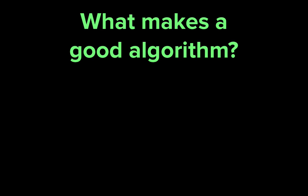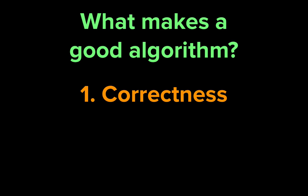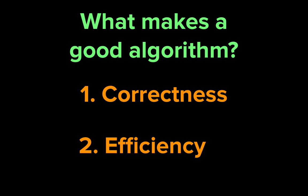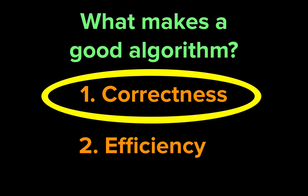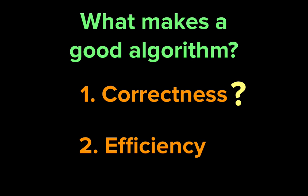Not all algorithms are created equal, so what makes a good algorithm? The two most important criteria are that it solves the problem at hand, and that it does so efficiently. Most of the time, we want an algorithm to give us an answer that we know is always correct. Sometimes, though, we can live with an algorithm that doesn't give us a correct answer or the best answer, because the only perfect algorithms that we know for these problems take a really, really long time.